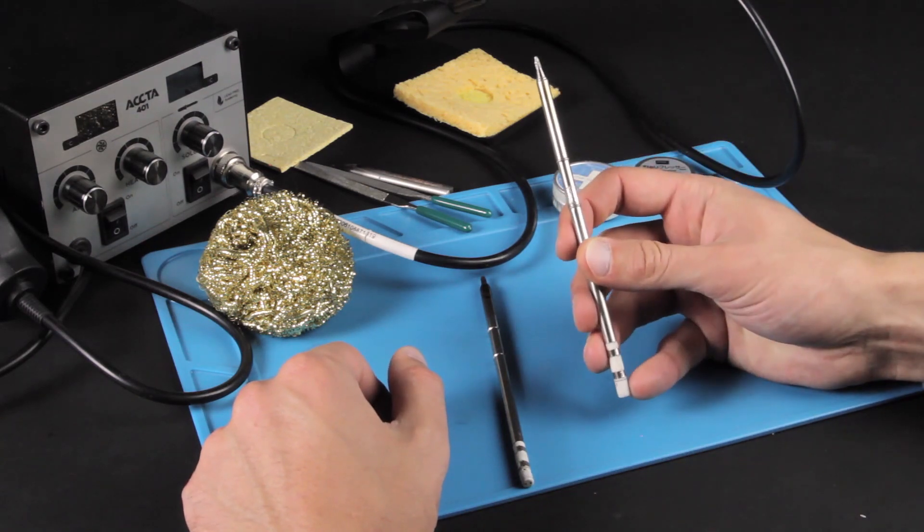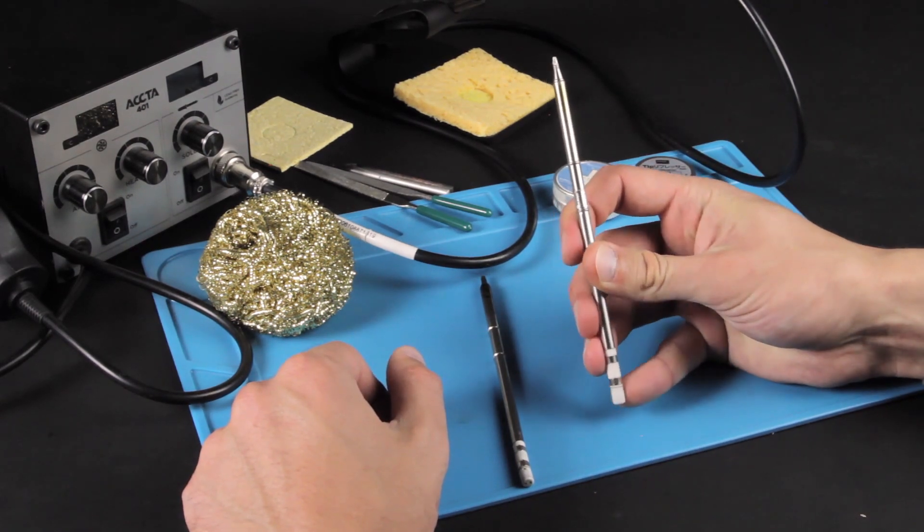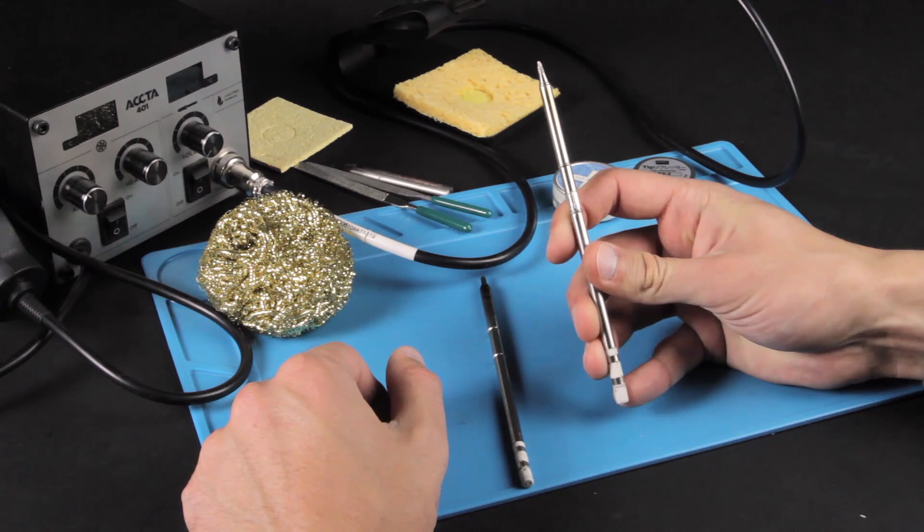This is how a new soldering tip looks like. It's nice and shiny and solder sticks to it perfectly.